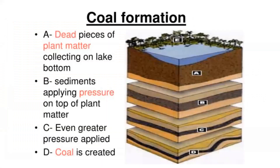Let's talk about coal formation. Some things that I want you to remember are highlighted in red — very important for the formation of coal. You have dead pieces of plant matter, or peat. This begins to collect on the lake bottom or in swampy marsh areas. Sediments then begin to apply pressure on top of one another. And finally, you have coal created from these dead plant or peat materials collecting on the bottom of the lakes, causing pressure. With that heat and pressure from those layers, you have coal formation. Remember that coal is formed by dead plant matter.